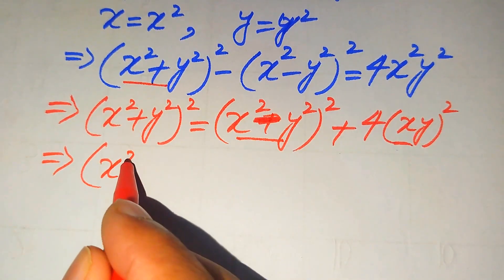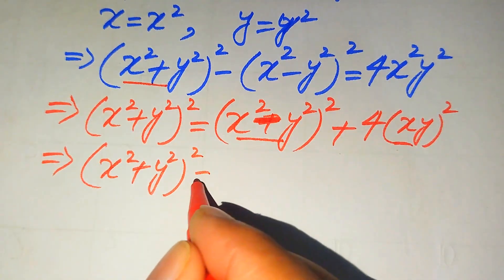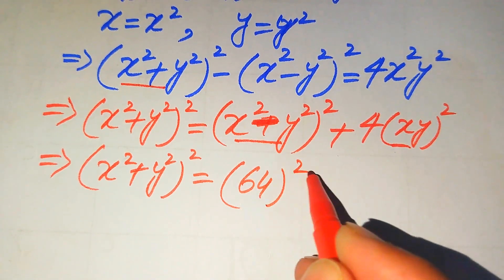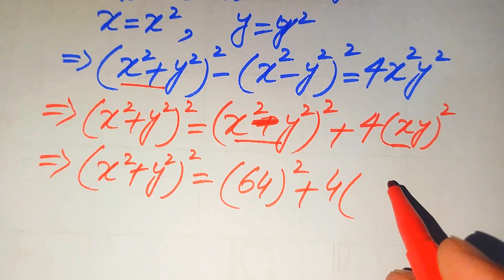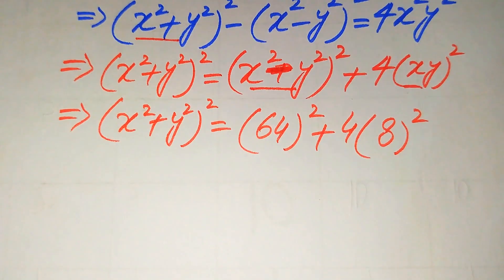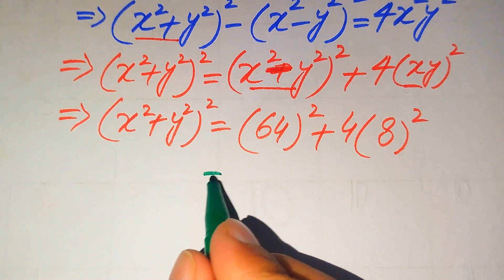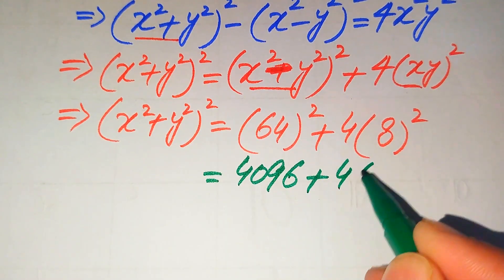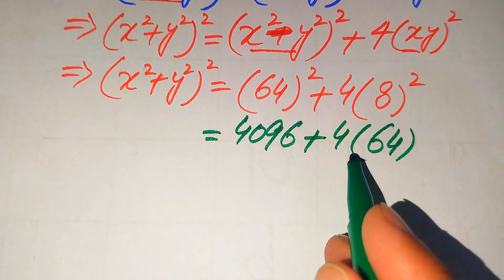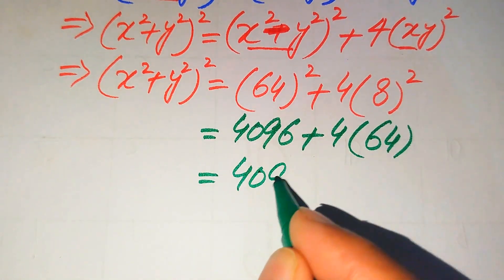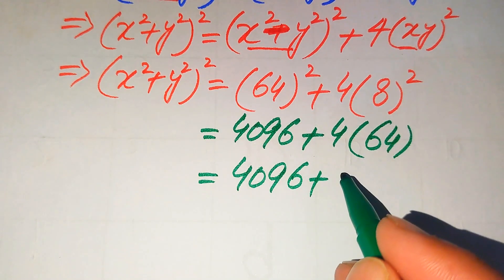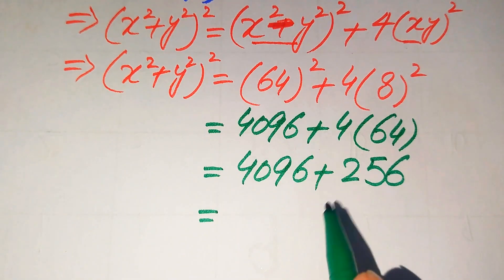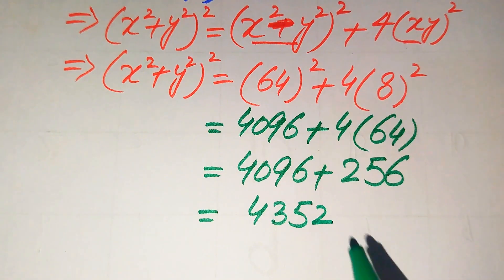Substituting the values, we get: (x² + y²)² = 64² + 4·8². We compute: 64² = 4096, and 4·8² = 4·64 = 256. Adding these two values: 4096 + 256 = 4352. So (x² + y²)² = 4352.